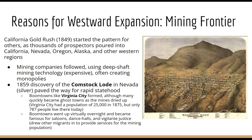The 1859 discovery of the Comstock Lode was a really great example of a major mining discovery. This was in Nevada and it was silver. This actually paved the way for rapid statehood in Nevada because of the boom in population. Boom towns would appear like Virginia City, springing up virtually overnight as thousands rushed in to try to make their profit.